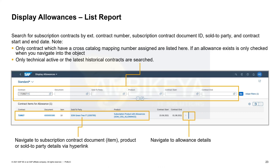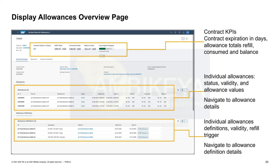When you start the Display Allowances app, you search for contracts. The important thing to know is that the search criterion is not whether the contract has an allowance — we cannot call Convergent Charging for every contract to check. Instead, the criterion is that the contract has a cross-catalog mapping, which we can easily check. When you then have your contract and want to monitor your allowance, you navigate in and can see your contract data, several KPIs, the allowances read directly from Convergent Charging, and the allowance definitions which are the mapping tables describing the allowances.